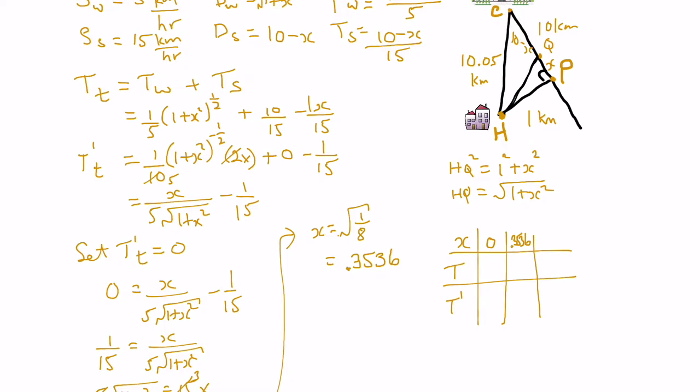And our last scenario was if x was 10, meaning that it would be right up here at this distance would be 10, which means we're right at the campus, so we're walking HC that distance.